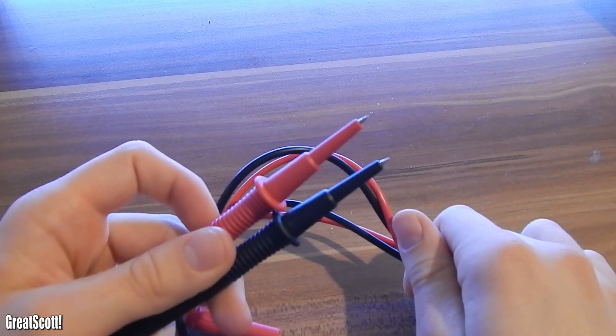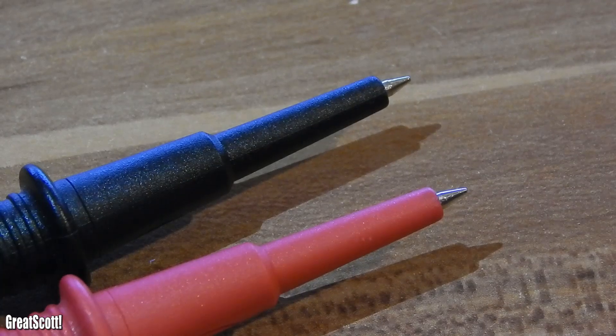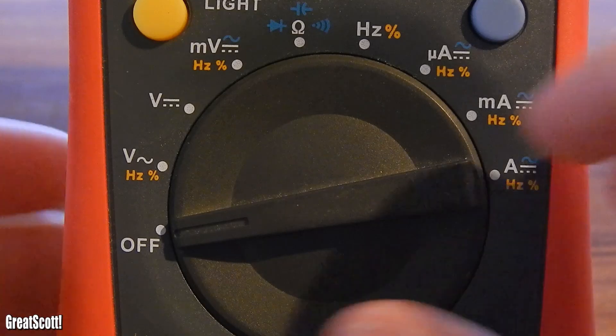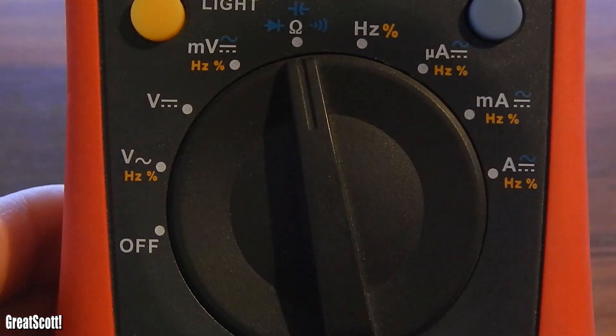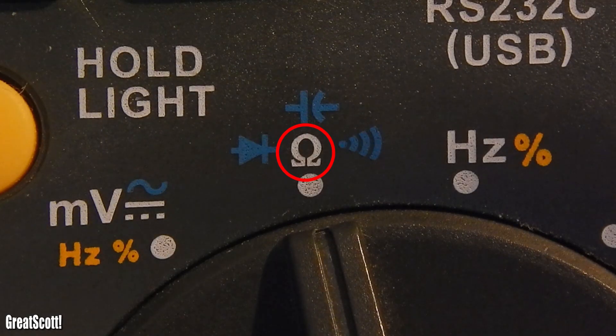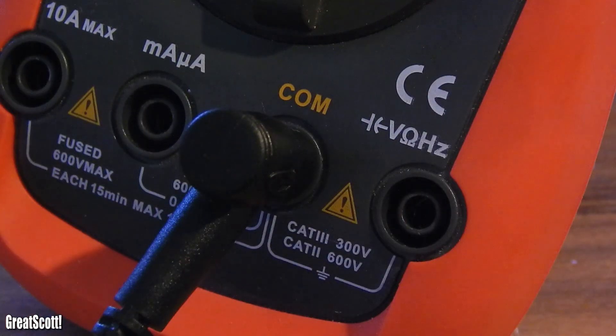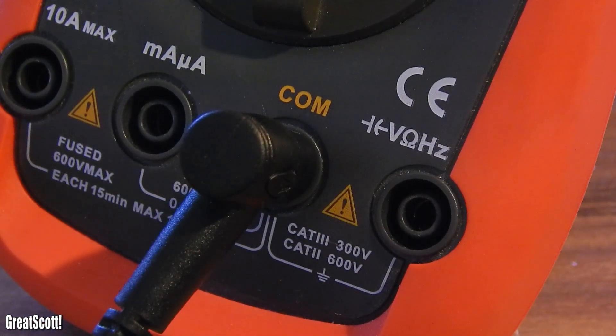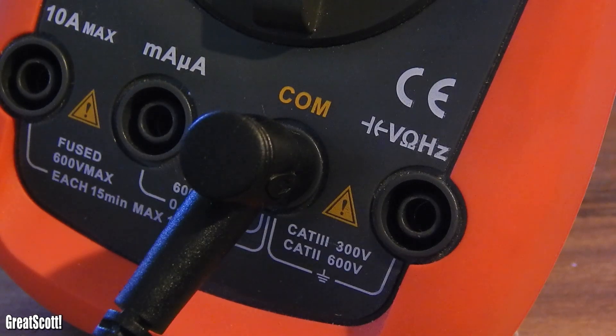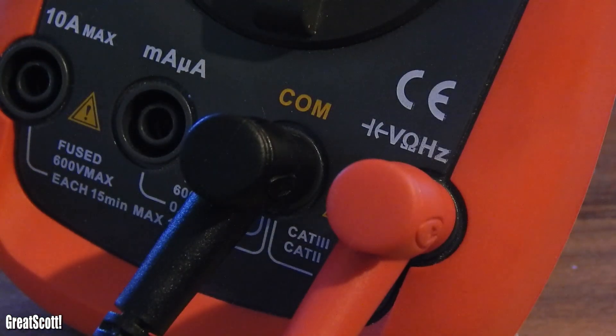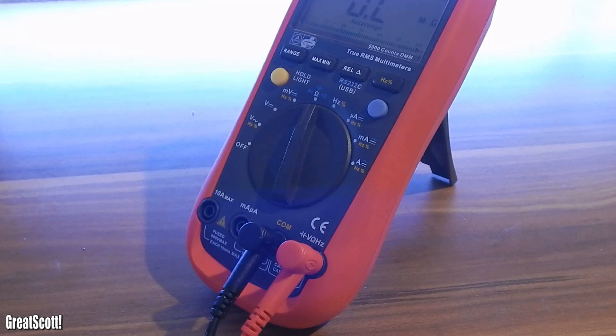You get probes with every multimeter. These are essential for measuring. The easiest measurement would be resistance. Just select the Ohm sign and stick your probes in the right socket. The black probe always connects to the common socket, so you don't have to worry about that. The red probe must only be changed if you measure current. Voltage and resistance is always the same socket.